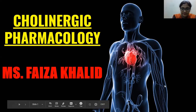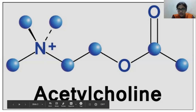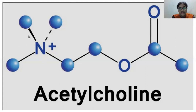Let's start by looking at how acetylcholine is structured. First, we have nitrogen (N) here, which carries a positive charge — meaning it is an ion. You can call it a quaternary ammonium ion. You can see that three carbon molecules are attached to it, so we call this a tertiary compound — whenever three molecules are attached to an atom.